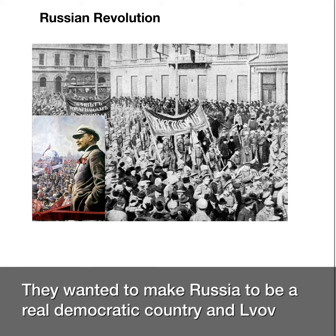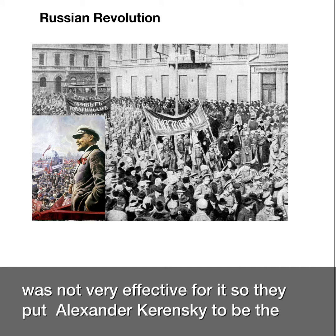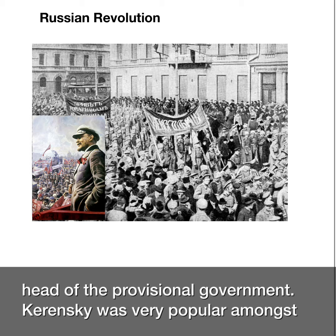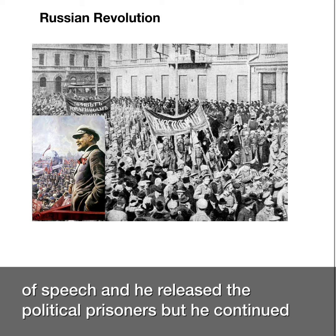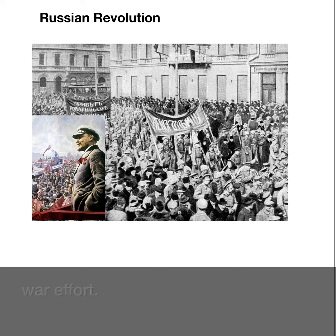The group that held power in the Provisional Government was the Mensheviks and Socialist Revolutionaries. They wanted to make Russia a real democratic country, but Lvov was not very effective. So they put Alexander Kerensky as head of the Provisional Government. Kerensky was very popular amongst Russian people at the time — he gave Russians freedom of speech, released political prisoners, but continued the war effort.